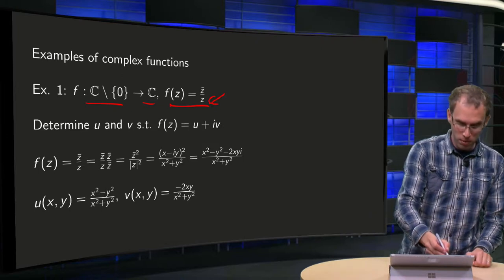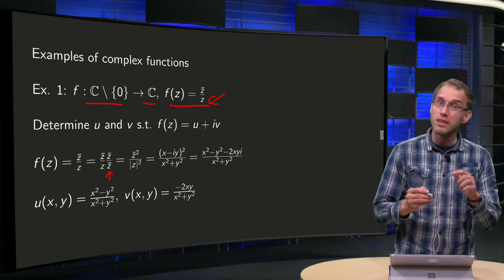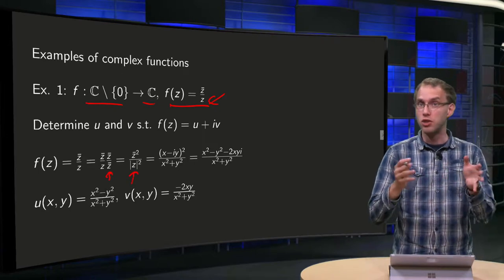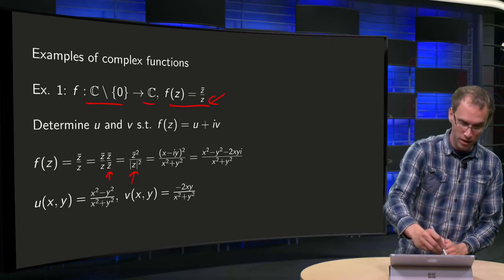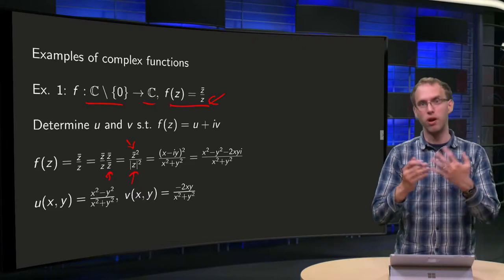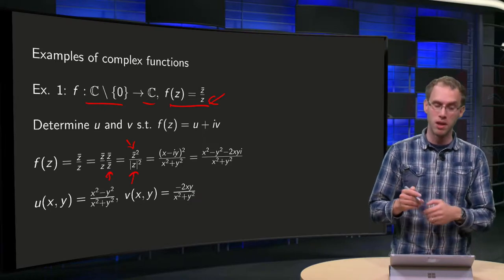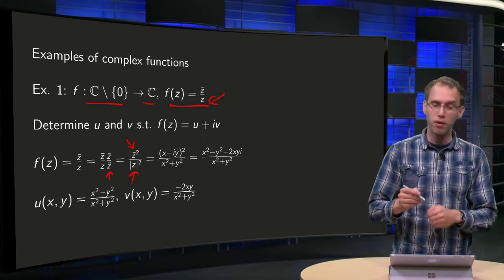If you multiply 1 by z̄ over z̄, then you get in the denominator the norm of z squared. That is something nice, that is just x² plus y². And in the numerator you get z̄ squared, so you have to do something over there. If you wouldn't do this first step, you would have to work out the quotient later on.